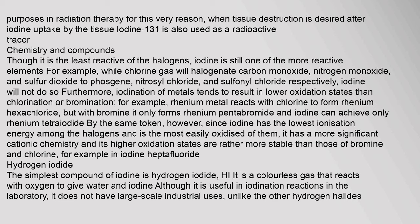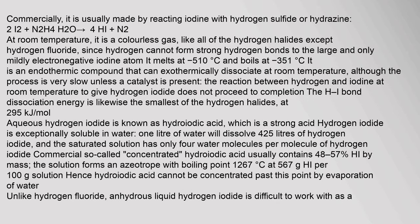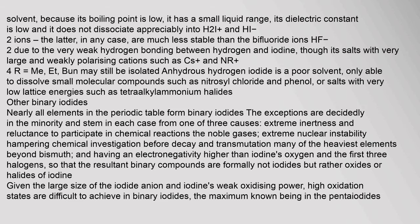Hydrogen Iodide: The simplest compound of iodine is hydrogen iodide (HI), a colorless gas that reacts with oxygen to give water and iodine. Although it is useful in iodination reactions in the laboratory, it does not have large-scale industrial uses unlike the other hydrogen halides. Commercially, it is usually made by reacting iodine with hydrogen sulfide or hydrazine. Because its boiling point is low, it has a small liquid range, a low dielectric constant, and does not dissociate appreciably into H₂I⁺ and HI₂⁻ ions.